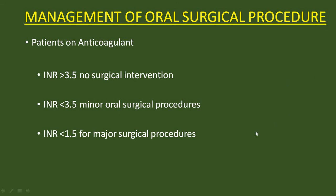For patients taking anticoagulants, the INR threshold is important: if INR is greater than 3.5, no surgical intervention — refer the patient to an oral surgeon or consult with a hematologist or cardiologist. If INR is less than 3.5, minor oral surgical procedures such as extractions can be performed. If INR is less than 1.5, major surgical procedures can be undertaken.